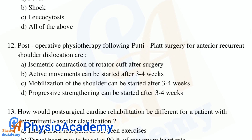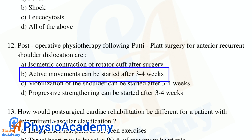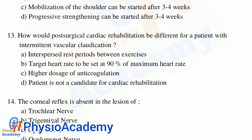Question 12: What post-operative physiotherapy following Putti-Platt surgery for anterior recurrent shoulder dislocation? Option A: isometric contraction of rotator cuff after surgery. Option B: active movements can be started after three to four weeks. Option C: mobilization of the shoulder can be started after three to four weeks. Option D: progressive strengthening can be started after three to four weeks. The correct answer is option B, active movements can be started after three to four weeks.